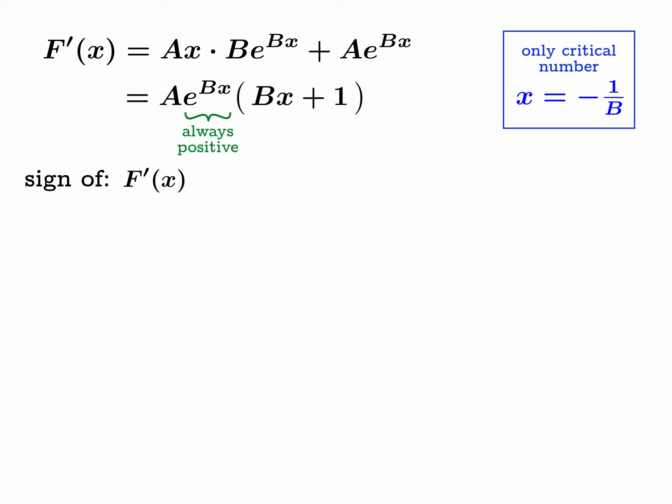One observation is e^(Bx) is always positive, so for the purposes of analyzing the sign, we might as well ignore it. We might as well analyze the sign of A times (Bx + 1), and that's a lot easier to deal with. The other observation is A is constant, so it's either going to behave like a positive or negative constant.